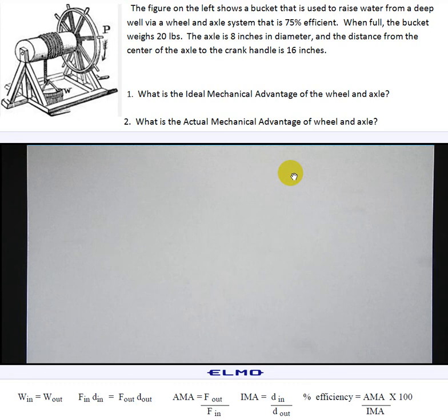The figure on the left shows a bucket that is used to raise water from a deep well via a wheel and axle system that's 75% efficient.